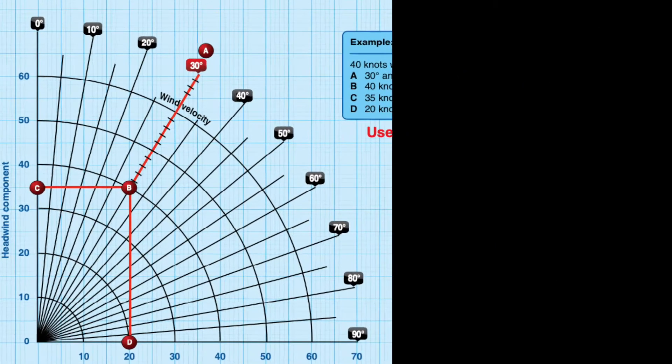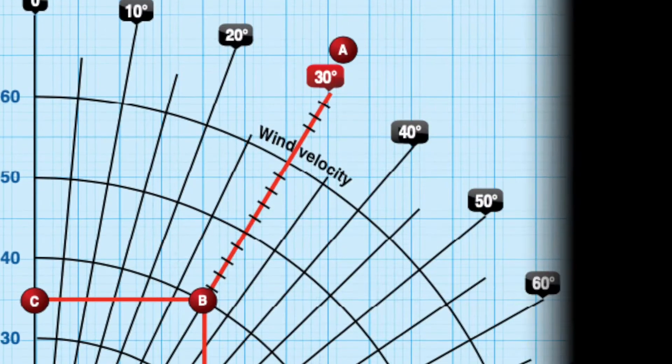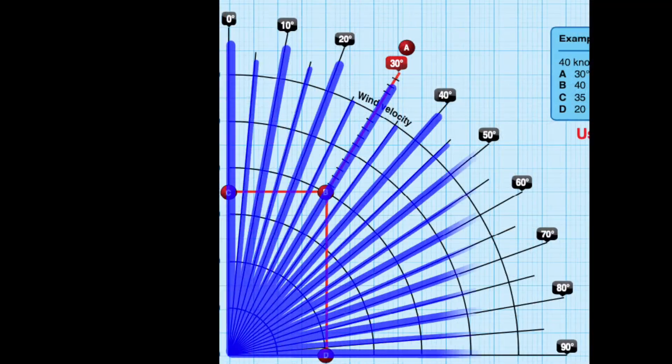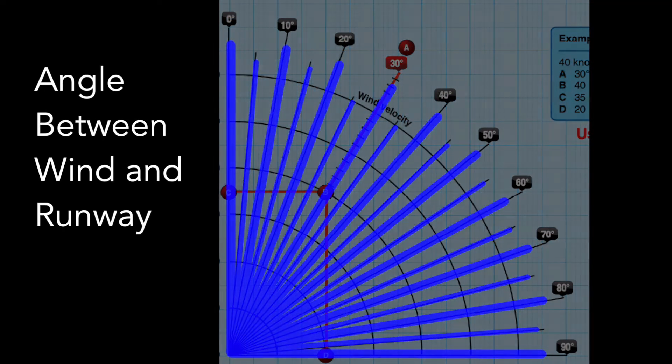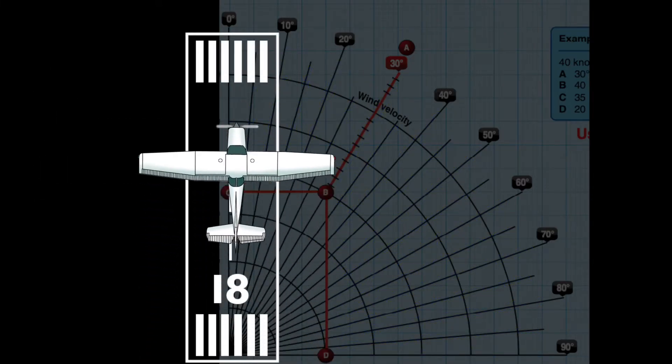With that information, we can locate our spot on the chart in this area where all these lines are labeled incrementally up to 90 degrees. These lines are all related to wind direction relative to a runway or the aircraft's intended path.